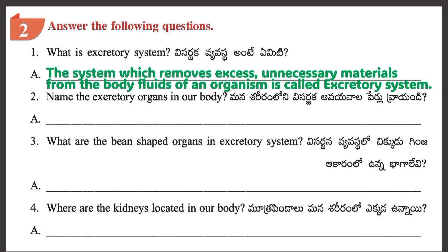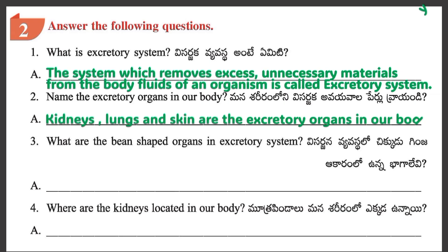Question 2: Name the Excretory Organs in the Excretory System. Answer: Kidneys, lungs, and skin are the Excretory Organs in our body.